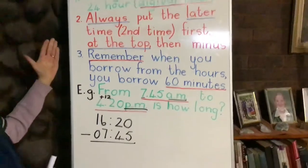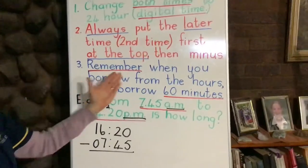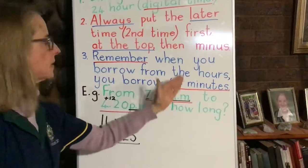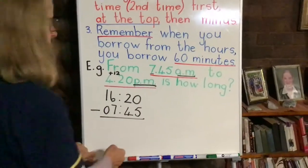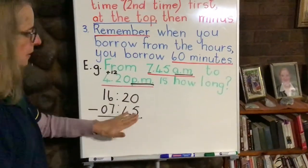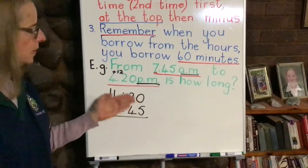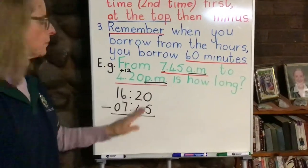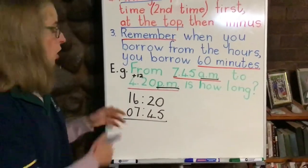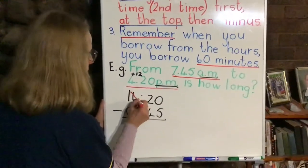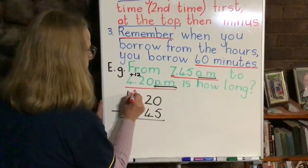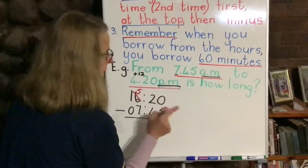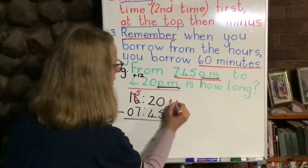Point 3: remember when you borrow from the hours, you are always borrowing 60 minutes. So let's look at our minutes first. How many minutes at the top? 20. And 45 at the bottom. We're not going to be able to minus 45 from 20, so we're going to begin by crossing out our 6 here, borrowing an hour — that becomes a 5 — and giving that hour over to the minutes as 60 minutes.